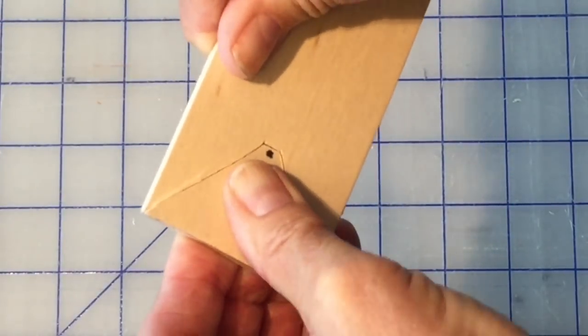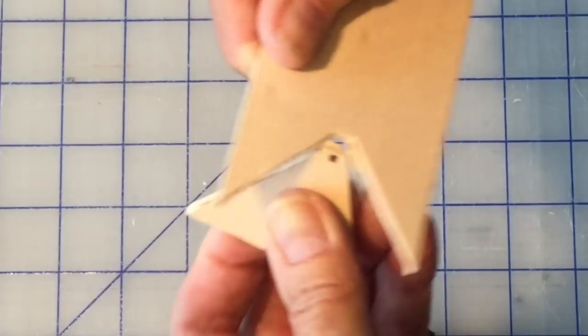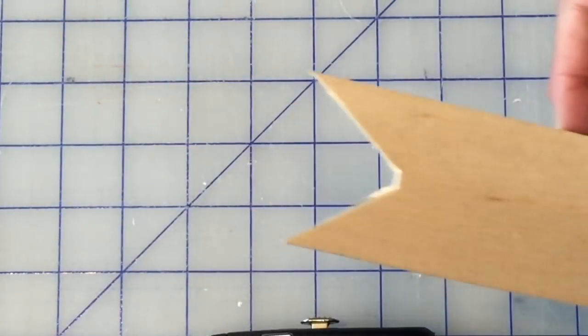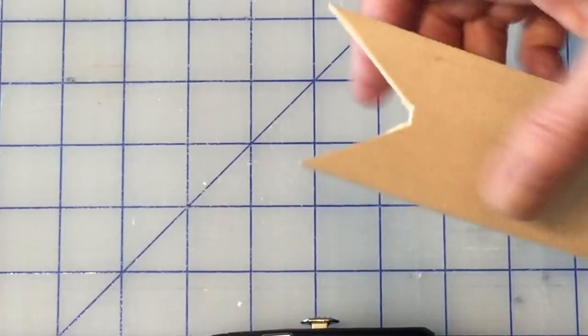Pop that out, moving back and forth. You've now got your nice V in there.